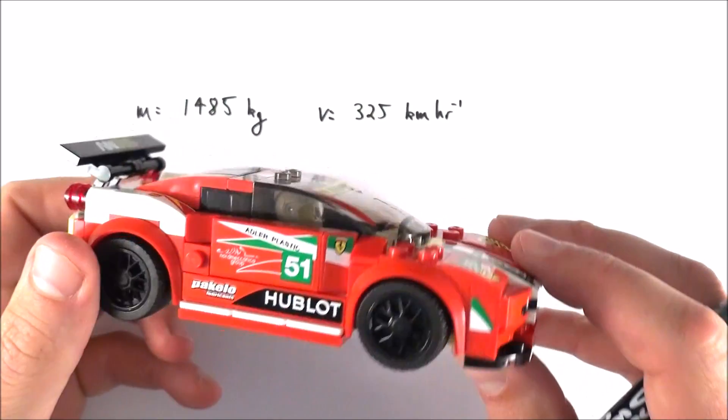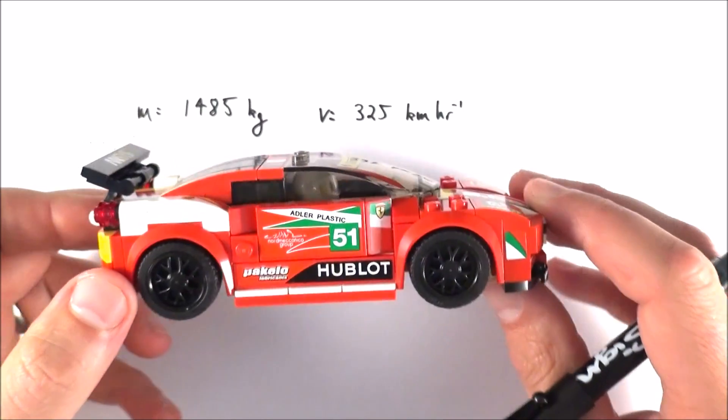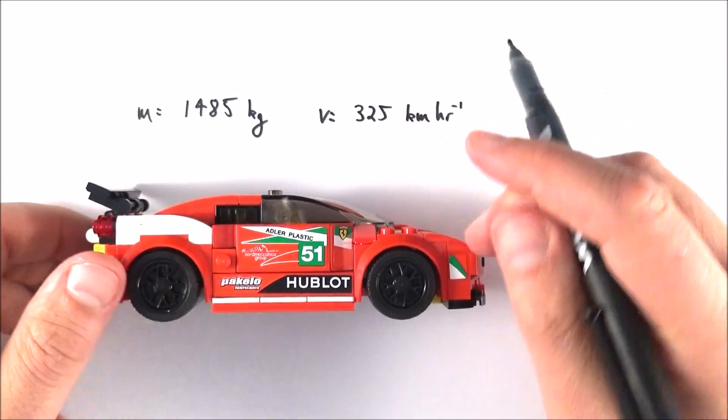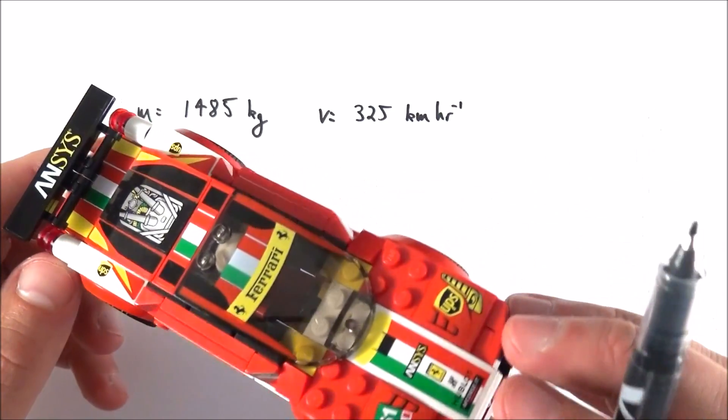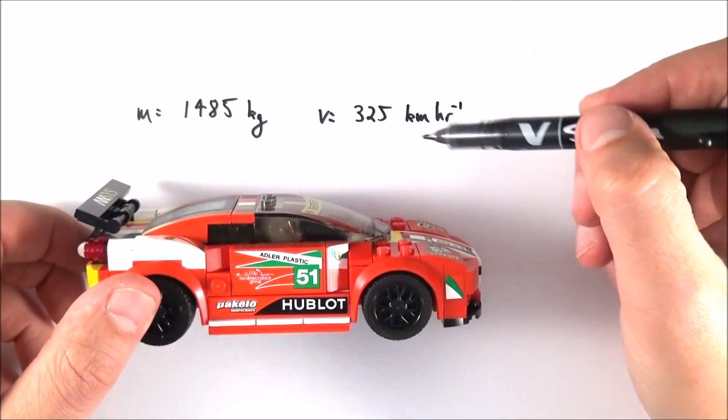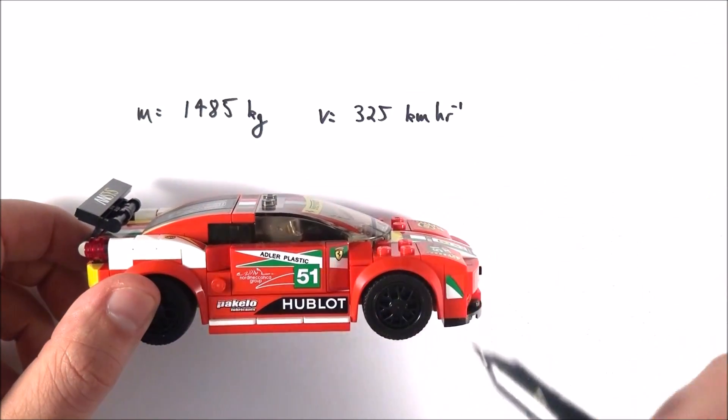So how do you work out the momentum of an object? Well perhaps we have a Ferrari which is moving along at maybe 325 kilometers per hour, the kind of maximum speed. Now for something like this it might have a mass of about 1485 kilograms and this velocity, well first we've got to convert it into SI units.